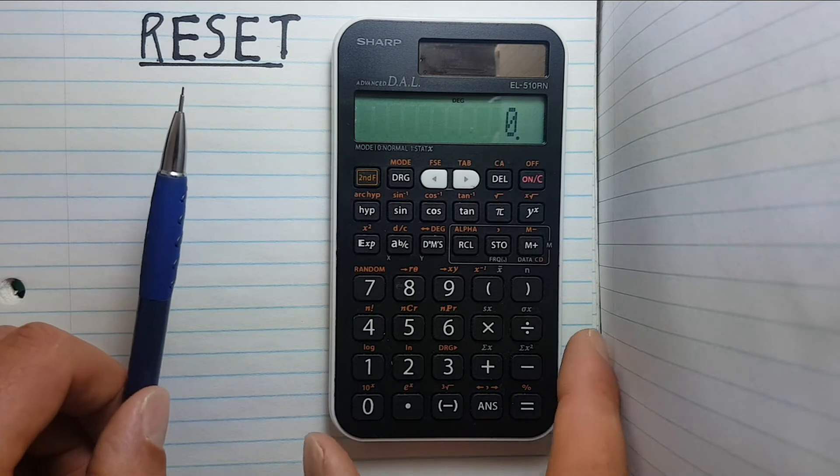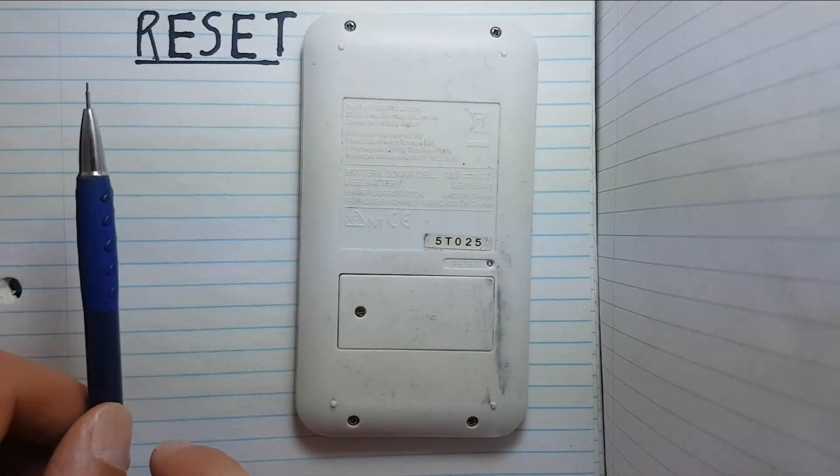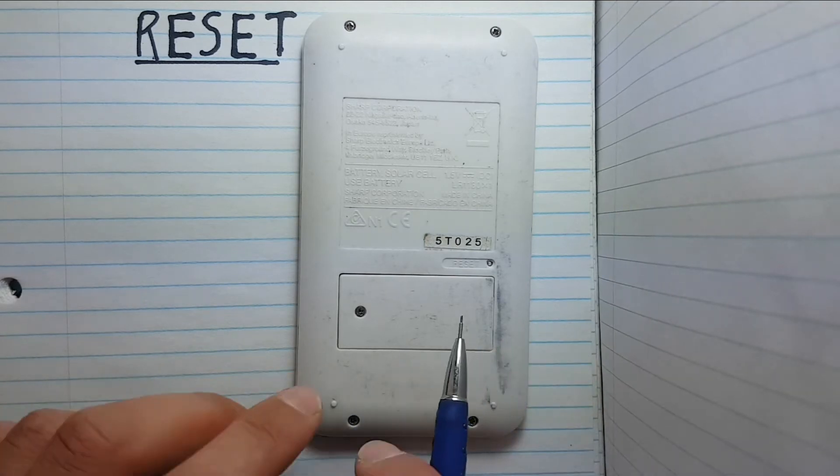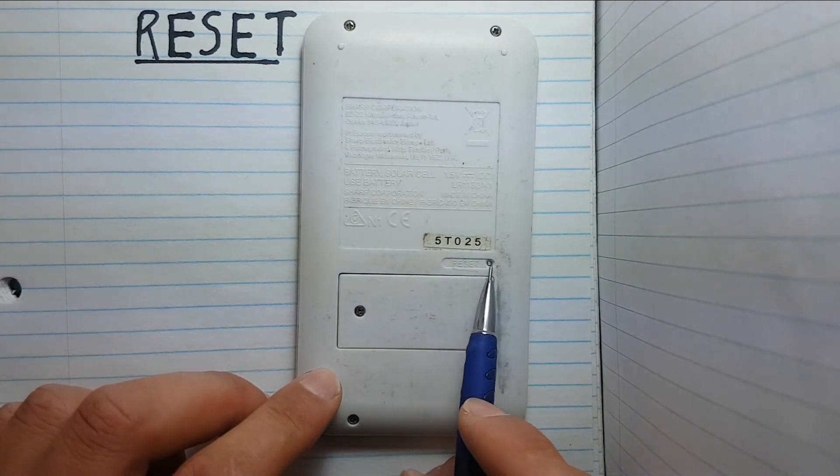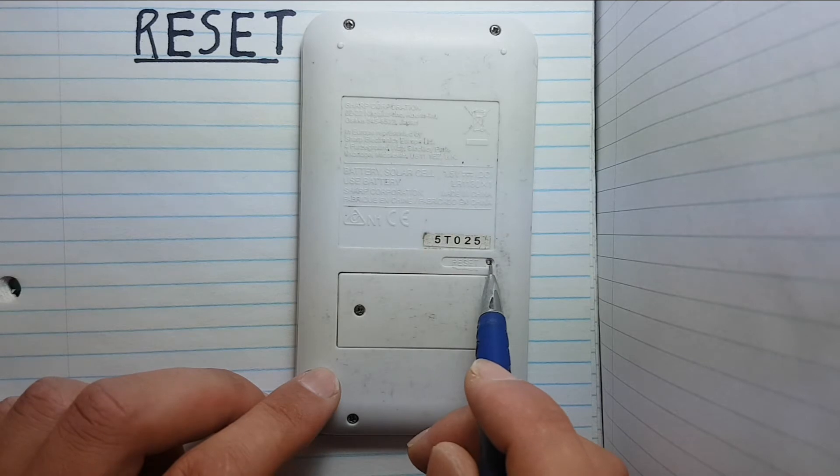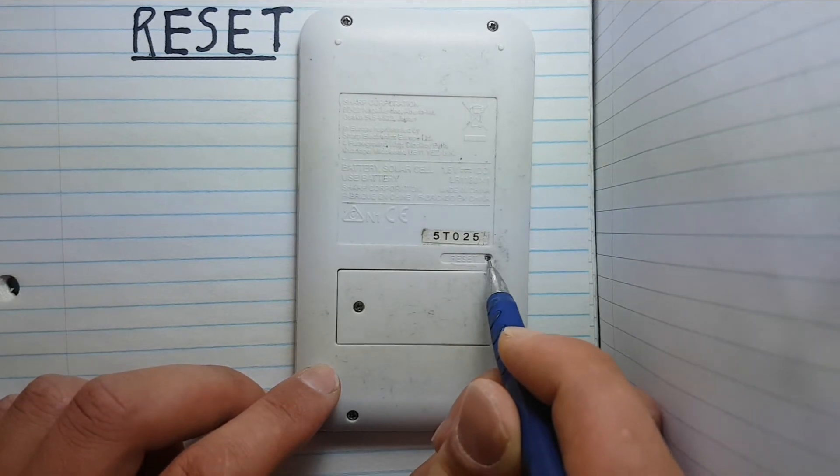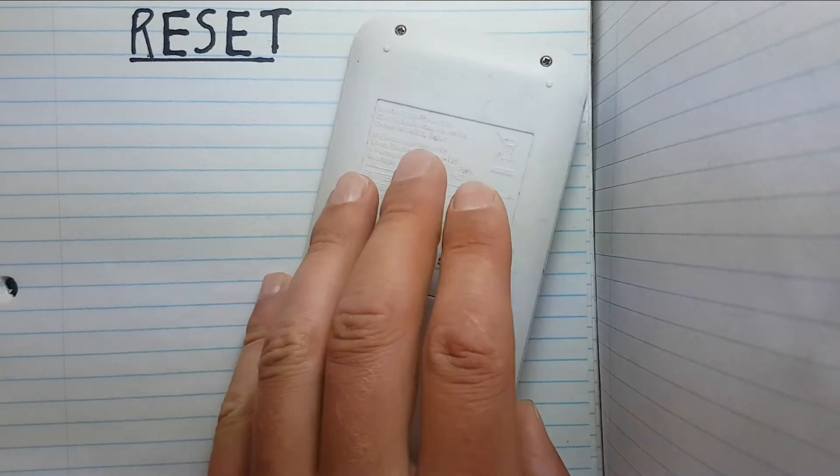Alright, to reset we turn it over and then on the back of our calculator here we see this that says reset and then a small indented button here. To reset it we simply press down on this button and with sufficient force you'll feel it go in and then release. This should have reset your calculator.